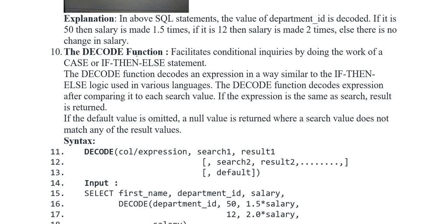Ab aata hai DECODE function. Ye facilitate karta hai conditional enquiries by doing the work of a CASE or if-then-else statement. DECODE function expression ko compare karta hai each search value ke saath. Agar expression same result pe match kare, result returned hota hai. Agar default value nahi mili, null value returned hoti hai jab search value does not match any result value.